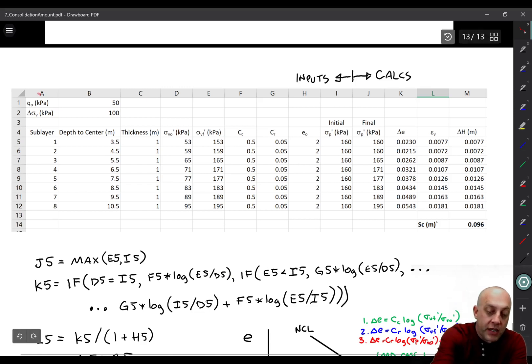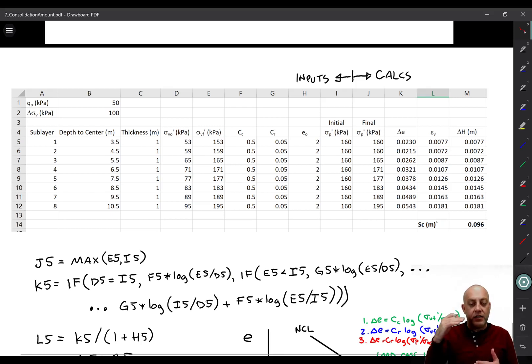So the inputs that I have up on top, q-naught, that's the initial vertical effective stress at the top of the clay. And then delta sigma v, that's the loading that's being imposed. Now I've divided this into eight sub-layers. And then I have the depth to the center of each sub-layer here. And what I've done is discretized them into one meter thick sub-layers. So the top of the clay would be at a depth of three meters. And the bottom of the clay would be at a depth of eleven meters. So it's an eight meter thick layer with eight one meter thick sub-layers. I'm assuming that the sand above the clay has a thickness of three meters. And that's what's giving us the 50 kPa vertical effective stress there.